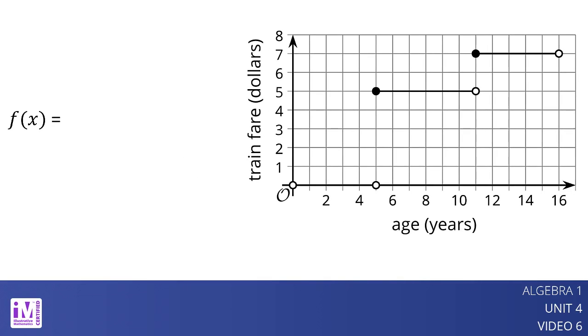The fare rules can be expressed with function notation where f of x equals 0 when x is greater than 0 and less than 5. f of x equals 5 when x is greater than or equal to 5 and less than 11. And f of x equals 7 when x is greater than or equal to 11 and less than 16.